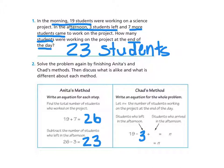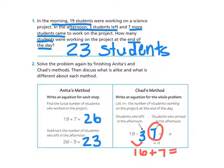Plus, 7 students came in the afternoon. So now, boys and girls, the way I would solve this problem is I'm going to go from left to right. So 19 minus 3 equals 16. Then 16 plus 7 equals 23. So there were 23 students at the end of the day.